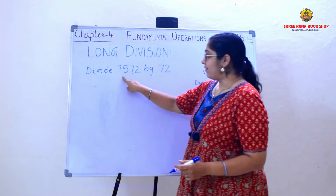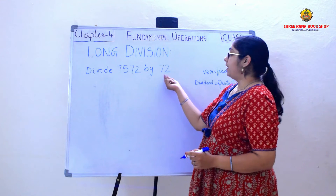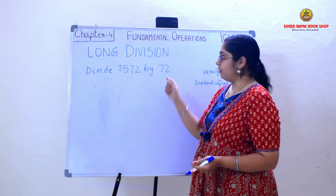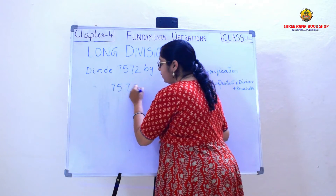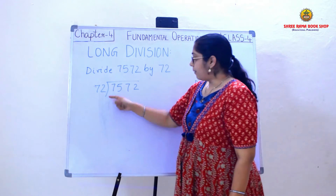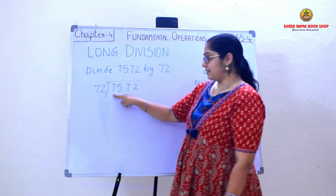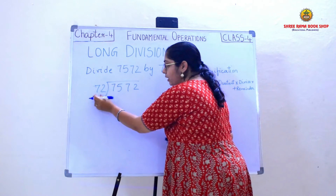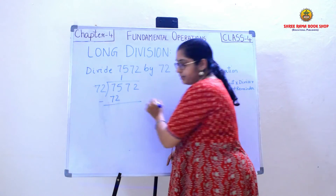Now children I have one more example on the board: divide 7572 by 72. In the previous example the divisor was a single digit number, but here I have two digits. Now 7572 is divided by 72. So I need to consider the first two digits since a single digit cannot be divided by a two digit number. So I will calculate with the first two digits, 75. 75 comes closest to 72 one time, so 72 ones are 72, which is the nearest number to 75.